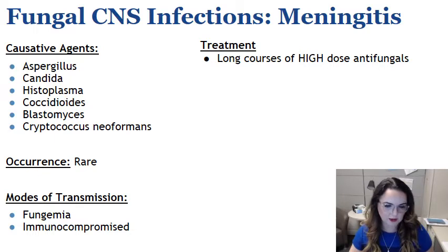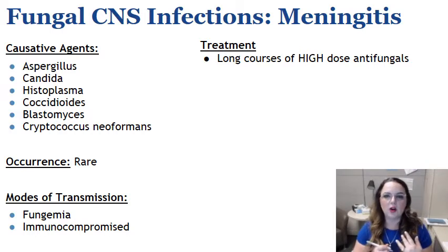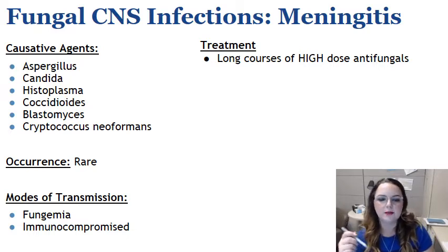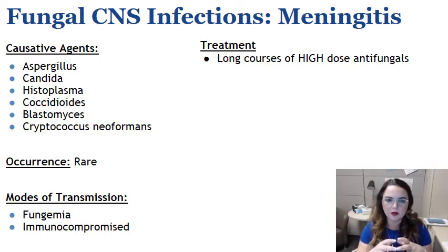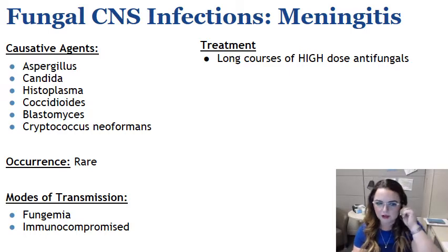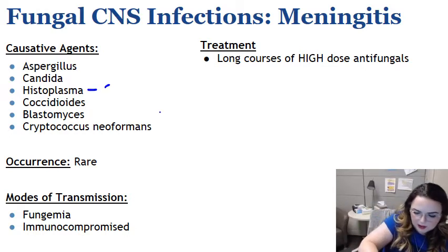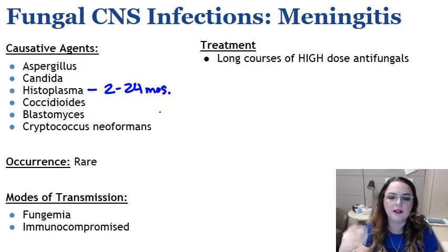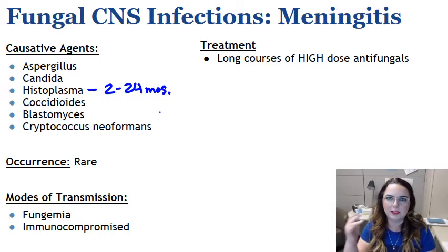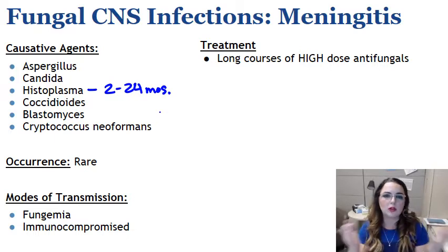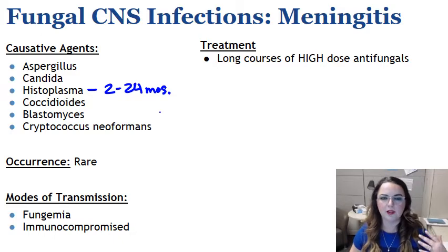Histoplasma, the causative agent of histoplasmosis, is endemic to the eastern half of the United States — think the Ohio and Mississippi River Valley — and sometimes Latin America. The yeast form is typically intracellular but can be seen both intracellularly and extracellularly in a biopsy sample. It causes pulmonary infections that disseminate, and when it reaches the CNS it can lead to death within 2 to 24 months, indicating it's a bit slow-growing and indolent. It's diagnosed by direct microscopy, culture of blood or bone marrow, serology, antigen detection in blood or urine, and GIEMSA, GMS, or PAS stains.